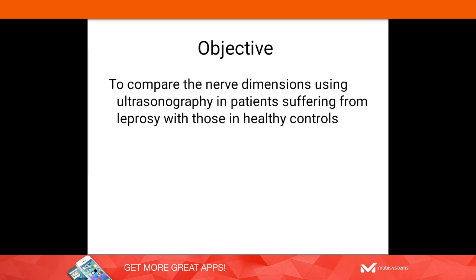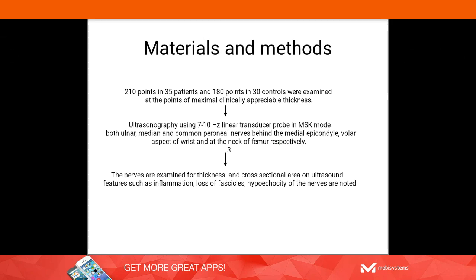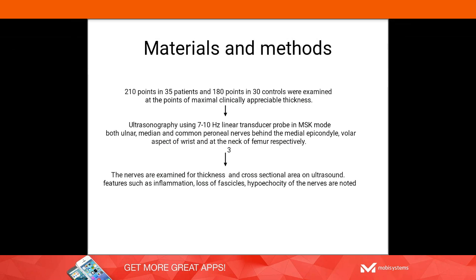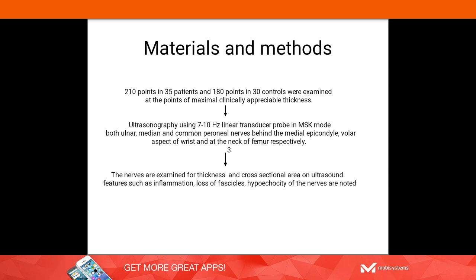The objective of this study is to compare nerve changes using ultrasound in patients versus normal healthy individuals. We took 35 patients and 30 controls and checked six nerve points in each individual — making 210 nerve points in patients and 180 in controls. They were examined clinically, followed by ultrasound using a 7–10 MHz linear transducer probe.